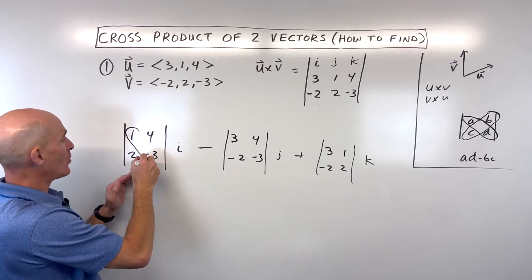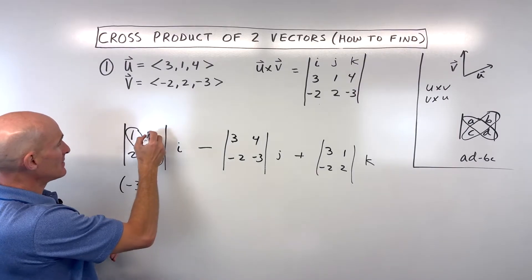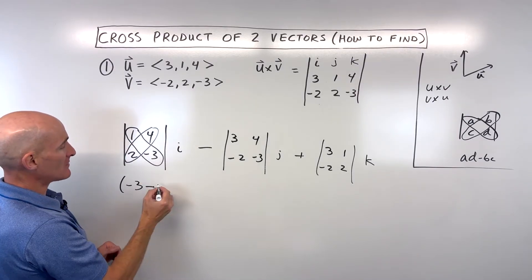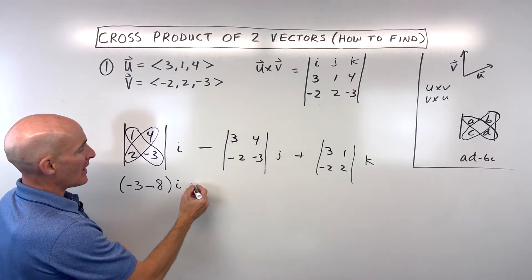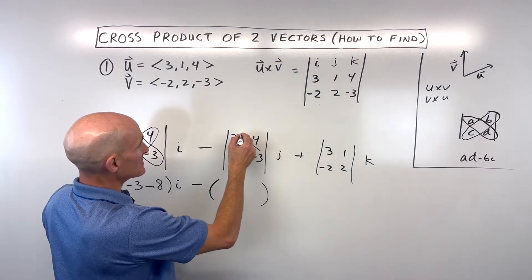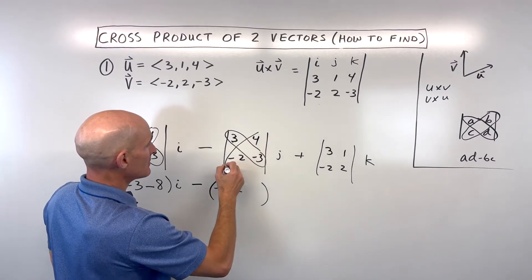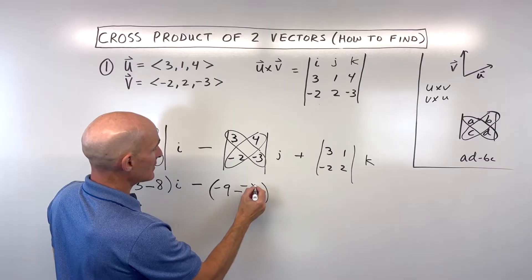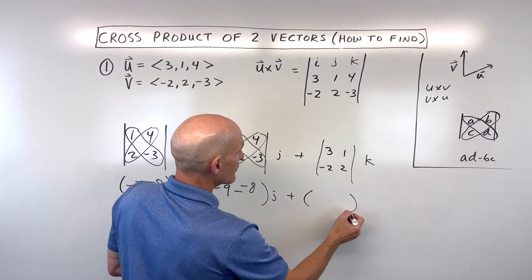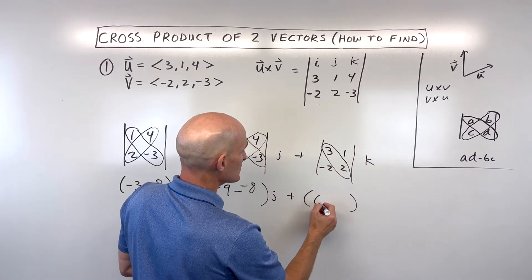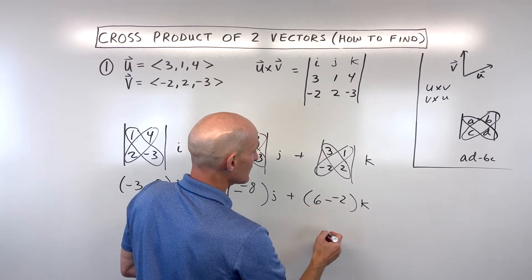So let's go ahead and do that. Over here, this diagonal one times negative three gives us negative three, minus the product of this diagonal four times two is eight — that's the i component. Now for this matrix, same thing: A times D gives negative nine, minus the product of this diagonal which is negative eight — that's j. Plus this diagonal three times two is six, minus this diagonal negative two times one is negative two — that's k.